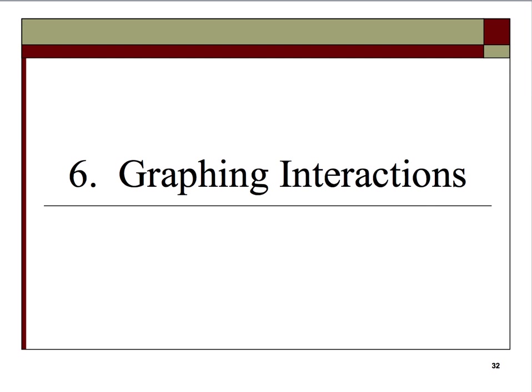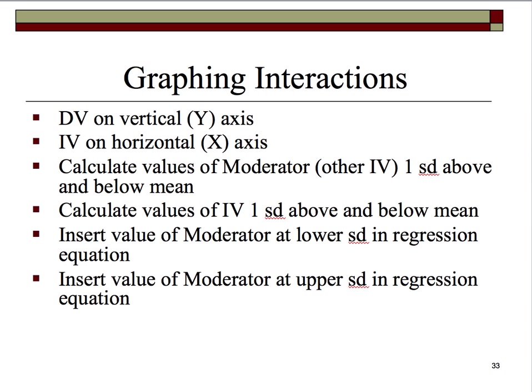So graphing interactions — we'll want to put the dependent variable on the vertical Y-axis and the independent variable on the horizontal axis. Then since we need to actually create some line segments, we'll have to calculate values of the moderator — the other IV — at one standard deviation above and below the mean, calculate values of IV1 one standard deviation above and below the mean, and then insert these values into the regression equation.